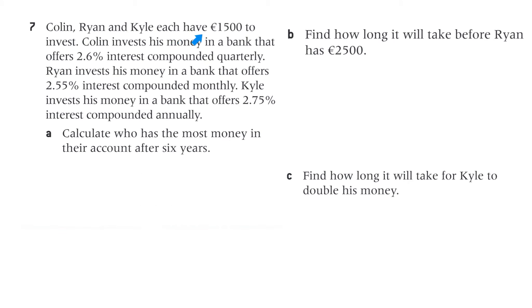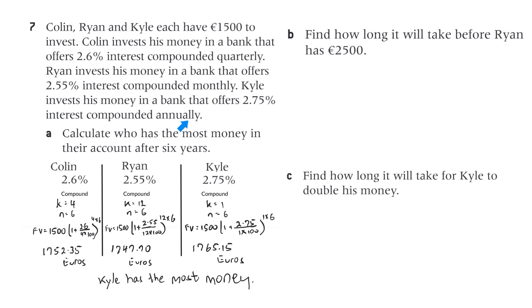Question 7. Colin, Ryan, and Kyle each have 1,500 Euro to invest. Colin invests at 2.6% compounded quarterly (K is 4), Ryan at 2.55% compounded monthly (K is 12), and Kyle at 2.75% compounded annually (K is 1). N is 6 for all. Putting it in the formula, Kyle has the most money after 6 years: 1,765 Euro and 15 cents.